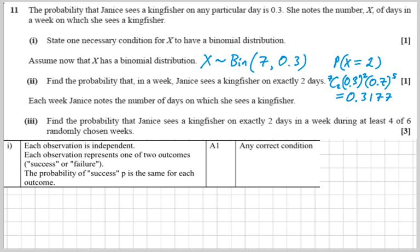Find the probability that Janice sees a kingfisher on exactly two days in a week during at least four of six randomly chosen weeks. It seems like there's a lot to be dealing with there.